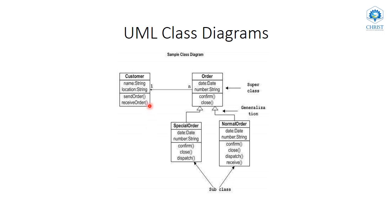The generalization arrow must point towards the parent class. When we represent a class in a class diagram, we draw a box divided into three sections. The first section contains the class name, which always begins with a capital letter — such as Customer, Order, Special Order, and Normal Order. The second section contains the variables or attributes. For Customer, we have two variables: name and location, both of string type. The third section contains the methods, represented with parentheses, such as send order and receive order.